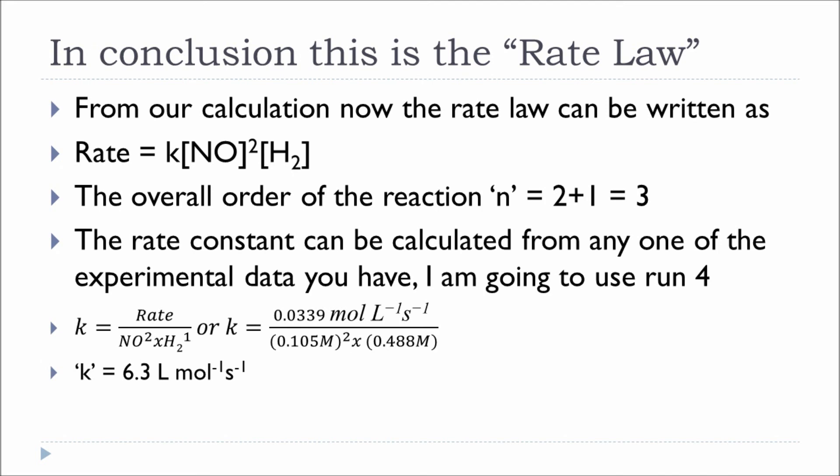That's how you solve an initial rate method problem: determine the value of k by first obtaining the rate law, finding the independent orders of the reactants using ratios of different experiments. If you liked the video, don't forget to rate, comment, and subscribe. Thank you and have a great day.